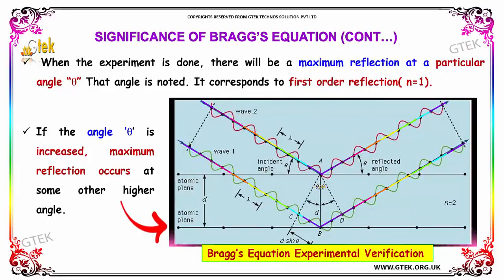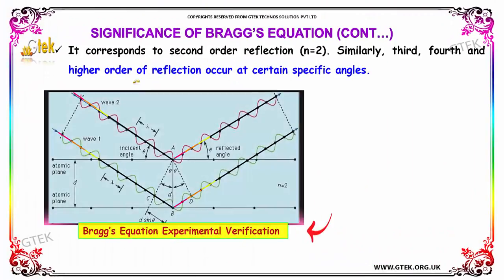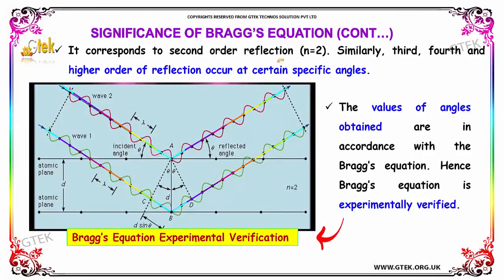If the angle theta is increased, maximum reflection occurs at some other higher angle. It corresponds to the second-order reflection, N equals 2. Similarly, third, fourth and higher order reflections occur at certain specific angles.